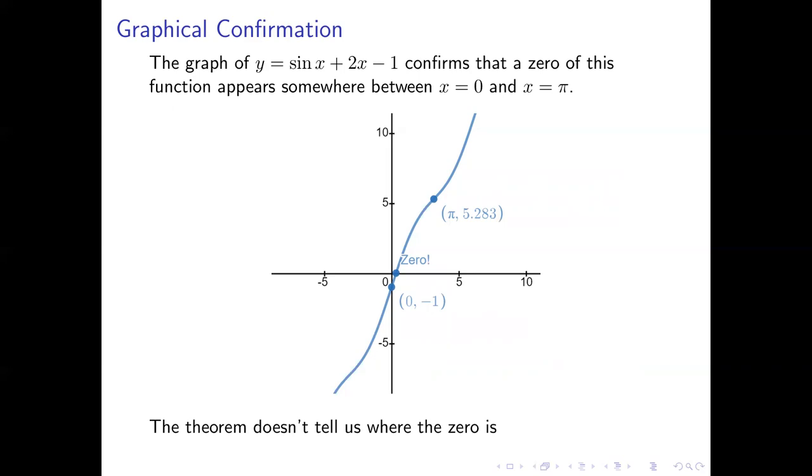Somewhere in between those two points, the graph has to go through the x-axis. You can see that happening there at that point labeled zero. But what the intermediate value theorem does not give us is the exact location of that zero. But it does guarantee that the zero exists. Somewhere between zero and π, f(x) must be equal to zero.